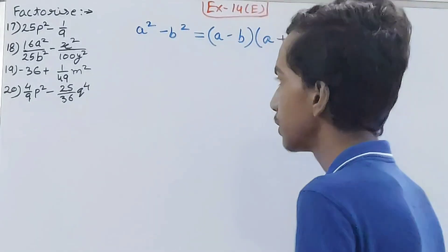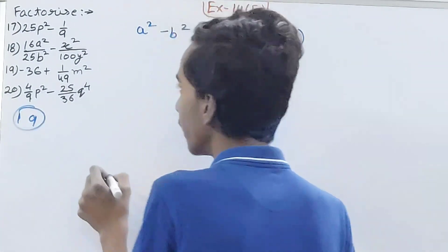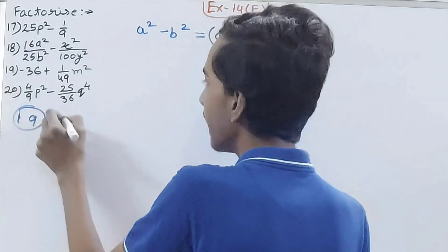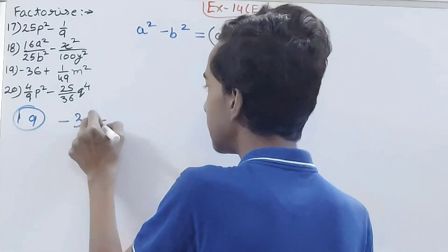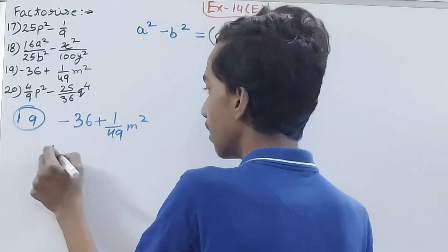See the 19th question, this is -36 + 1/49m². Again bring it to this original form. I can write this -36 + 1/49m² as 1/49m² minus 36. I have just changed the order.